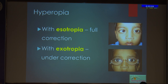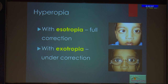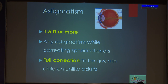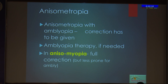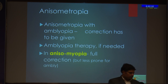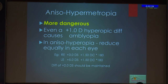Just because exotropia is there and hypermetropia is there doesn't mean that you should not give glasses — it should be given and you have to ensure that visual acuity is optimal, only then will the exotropia get better. So just because exotropia is there, we undercorrect the hypermetropia but do not withhold correction. Any astigmatism more than 1.5 D should be corrected. Anisometropia is very important — proper correction has to be given, especially in aniso-hypermetropia, because these children are highly prone for amblyopia. Even a 1-diopter hyperopic difference can cause very severe amblyopia.